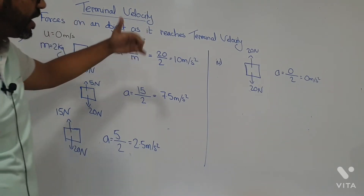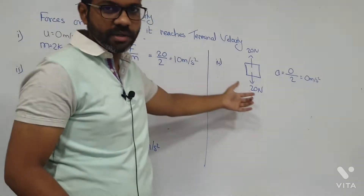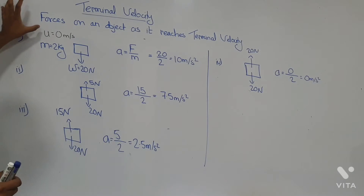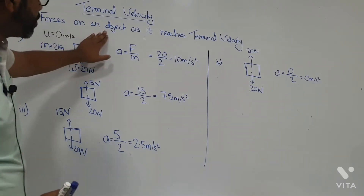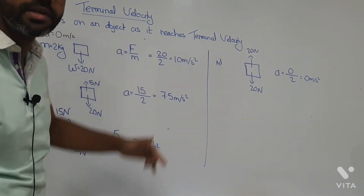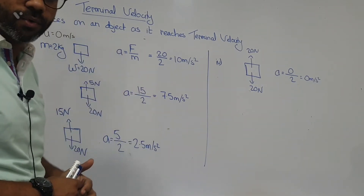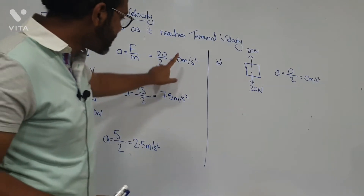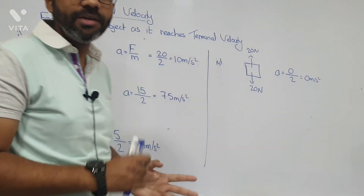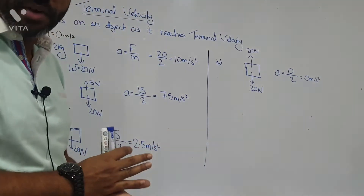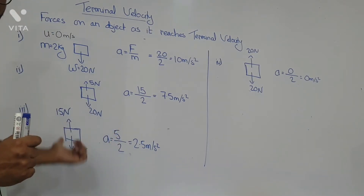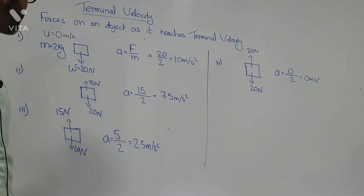The object starts from initial velocity and finally reaches terminal velocity. We will be talking mainly about what are the forces acting on the object as it reaches terminal velocity, how does the value of those forces change, how does the acceleration of the object change, and what happens to the final velocity of the object. So let us start.